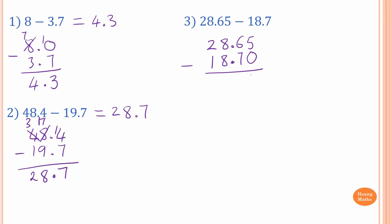5 take away 0 is 5. 6 cannot take away 7, so borrow 1 from 8 — the 8 becomes 7, and 6 becomes 16. 16 take away 7: 10 take away 7 is 3, and 6 is 9. Otherwise, start from 7, use your finger, count up to 16: 8, 9, 10, 11, 12, 13, 14, 15, 16 — it's 9. And then the decimal point, we write it down first.